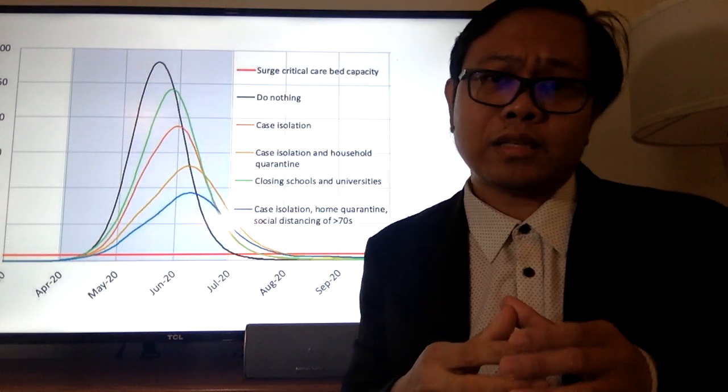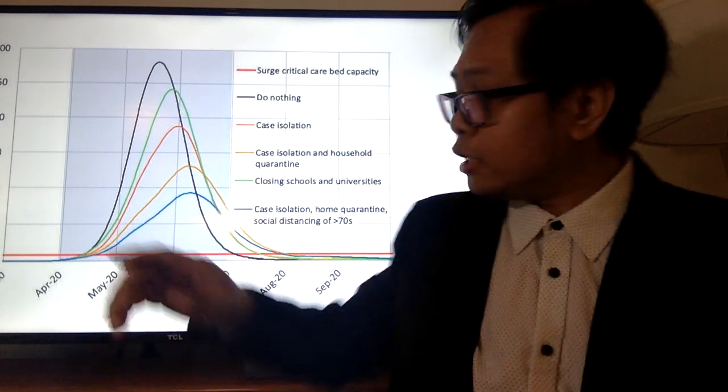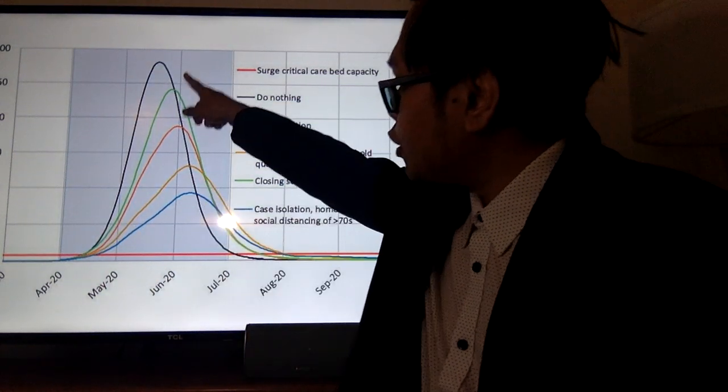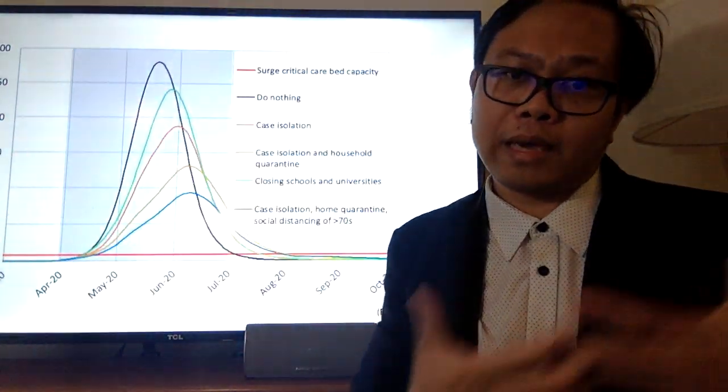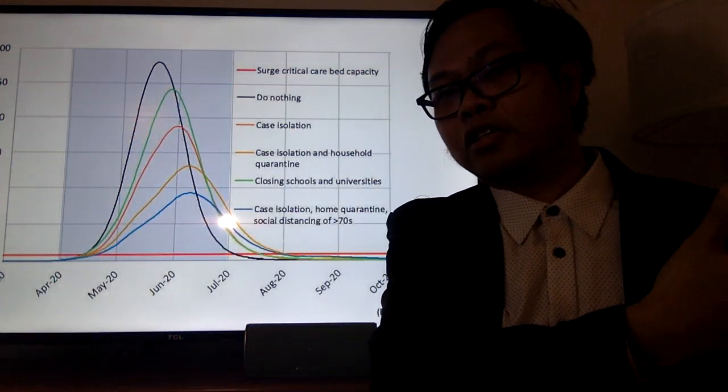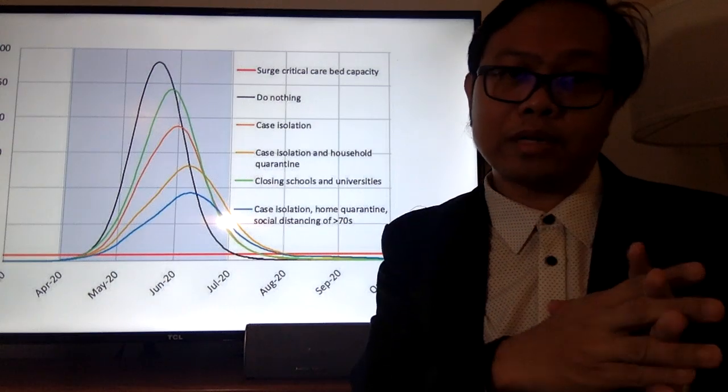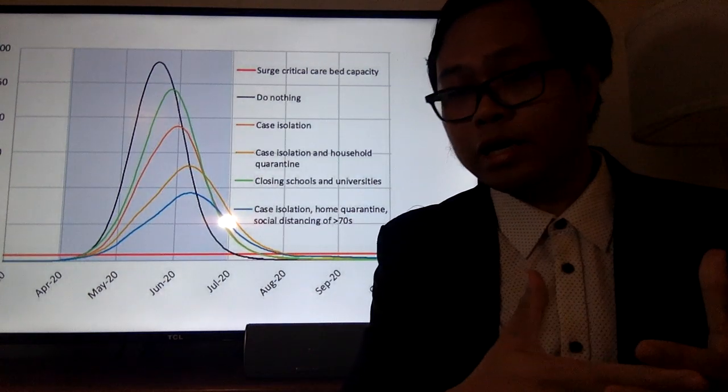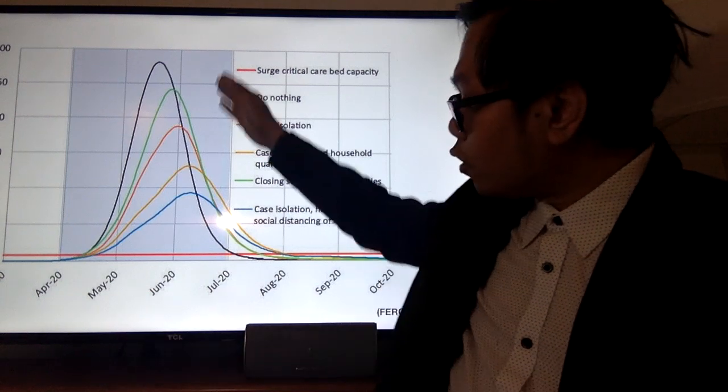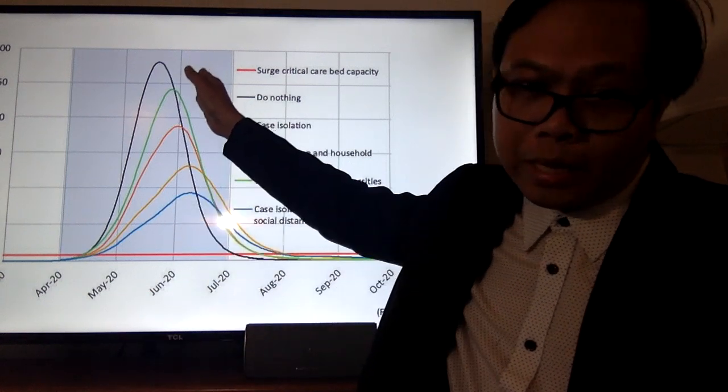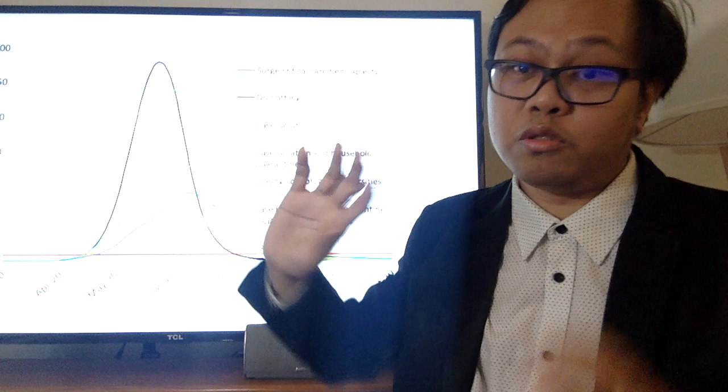Ibig sabihin sa model ni Ferguson, which similar din kami ng estimate, around June din yung peak. Nagko-coincide. Yung model na ginamit ko may external validation. Ibig sabihin, based dun sa aming parameters na ginamit, although iba lang yung ginamit na reproductive number, mas specific sa Pilipinas sa akin, nagko-coincide kami ng prediction. The peak of the prediction is around June.